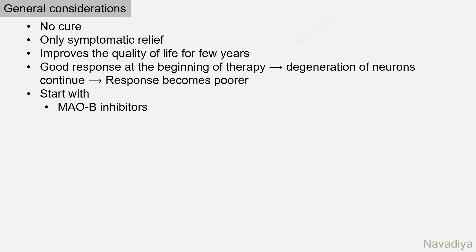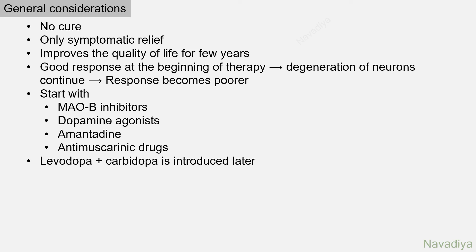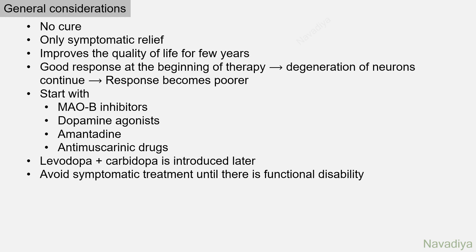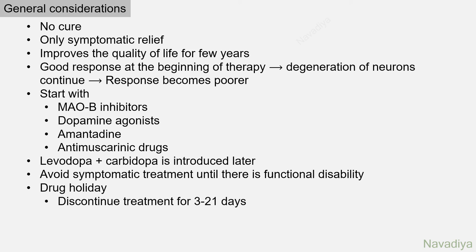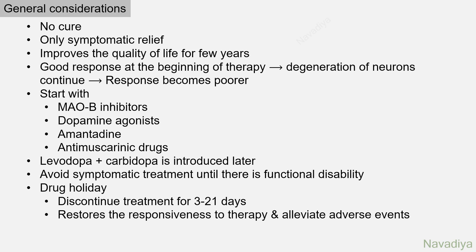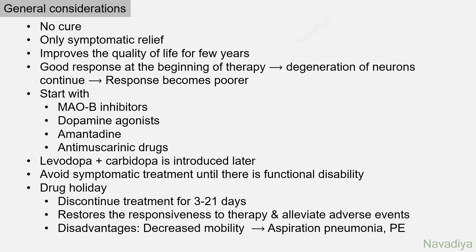Usually therapy is started with MAO-B inhibitors, dopamine agonists, amantadine, or anti-muscarinic agents. Levodopa and carbidopa are introduced later. It is usually preferred to avoid symptomatic treatment until there is some functional disability. There was a concept of drug holiday, where therapy is discontinued for 3 to 21 days to restore responsiveness and alleviate adverse events; however, decreased mobility during this period can cause aspiration pneumonia, venous thromboembolism, and pulmonary embolism, so drug holidays are not usually preferred these days.